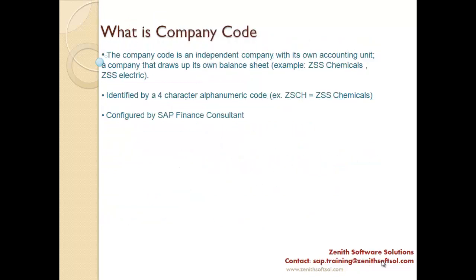What is company code? Company code is an independent company with its own accounting unit — a company that draws up its own balance sheet, meaning profit and loss transactions are made at the company code level. In SAP, the company code is identified by a four-character alphanumerical code. Company code is configured by the SAP finance consultant, but as an SAP HCM consultant, you need to know the company code because it is part of the enterprise structure.